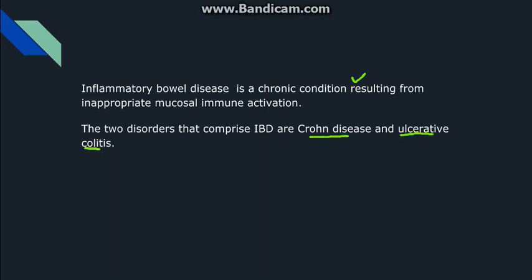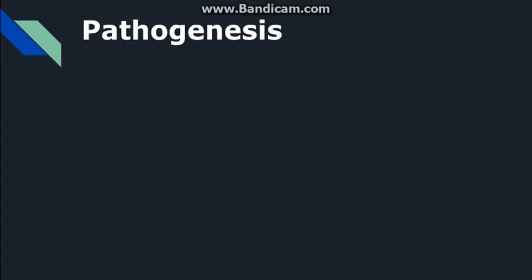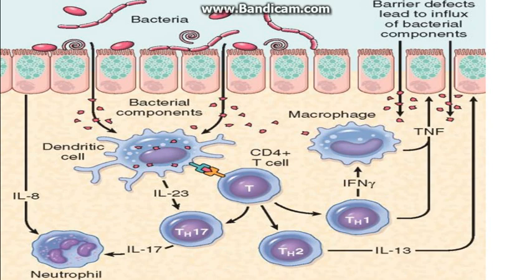Both Crohn's disease and ulcerative colitis are more common in females and occur around the teens or early 20s. The pathogenesis of both diseases involves the intestinal microbiota, the intestinal epithelium, and the mucosal immune cells.